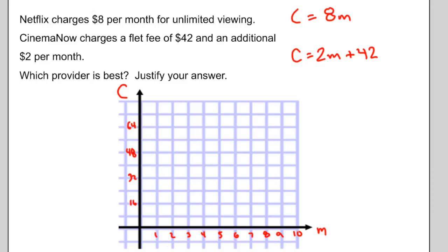I'll start with Netflix, and I'll graph Netflix in purple. Netflix is a direct variation, so it starts at the origin. And every month I pay another $8. So my line's going to look something like that. There's my line that represents Netflix.